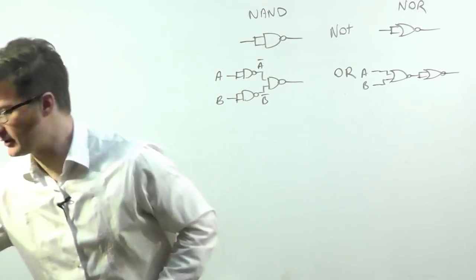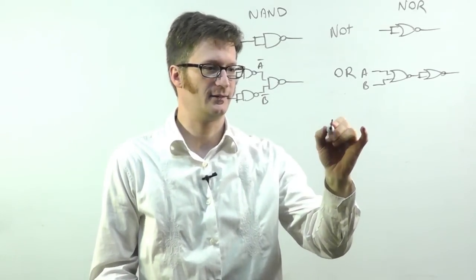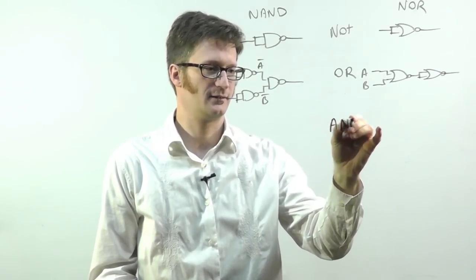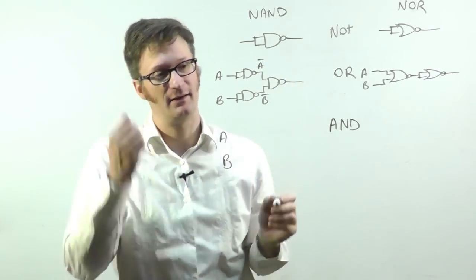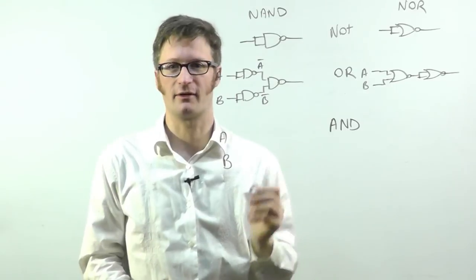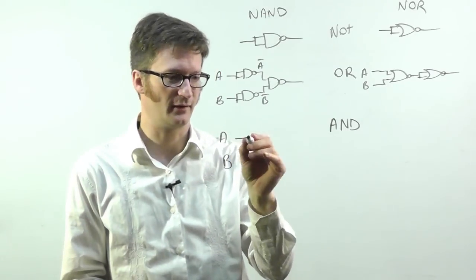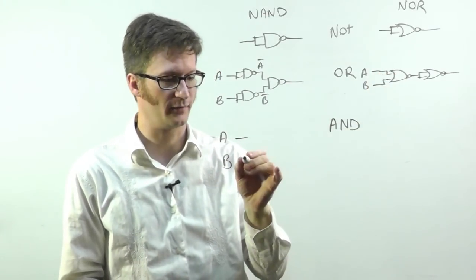Let's take a look at what AND looks like. Well, a NOT AND with an inverter after it is an AND. So it's like the OR for NOR.